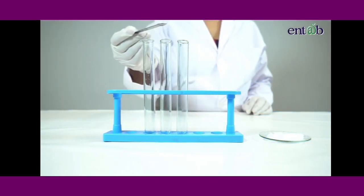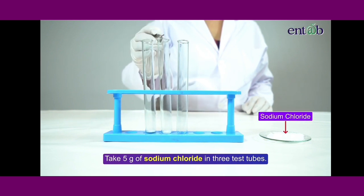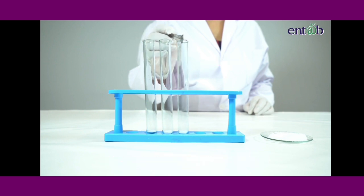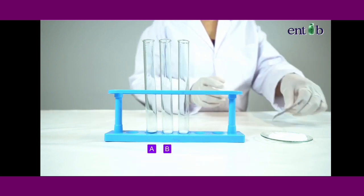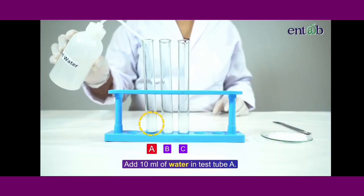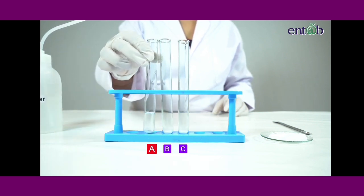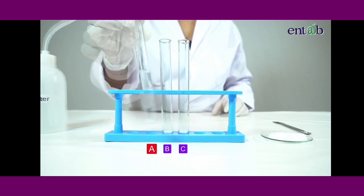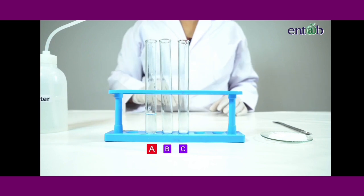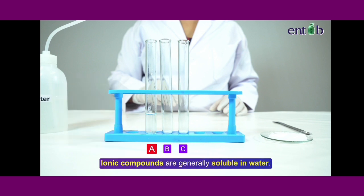We shall now take about five grams of sodium chloride in three test tubes. Let us label them as A, B, and C. In test tube A, let us add about 10 ml of water. Let us now shake it a little and observe it carefully. Sodium chloride readily dissolves in water, indicating that ionic compounds are generally readily soluble in water.